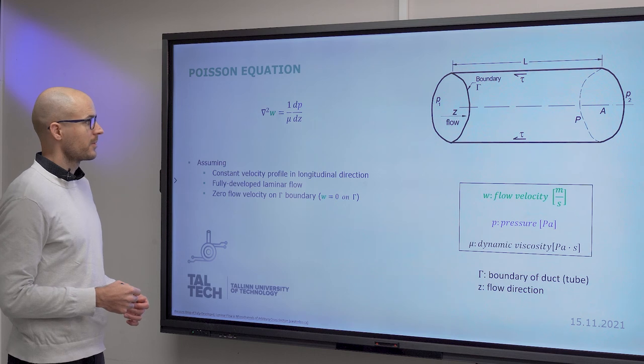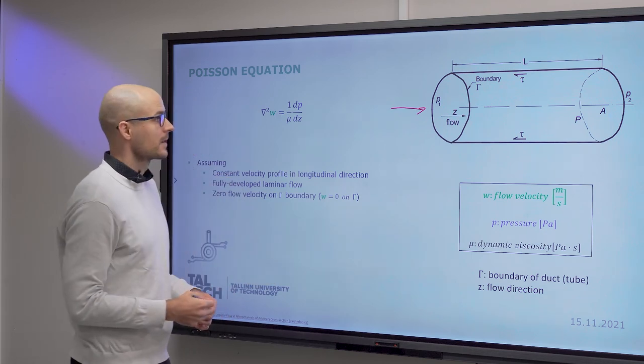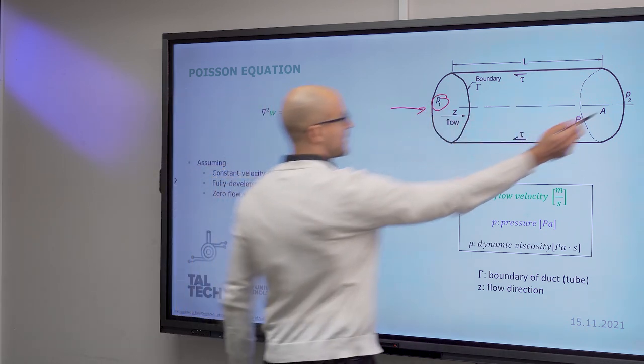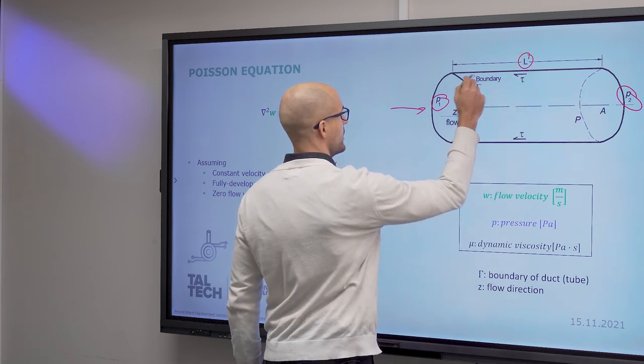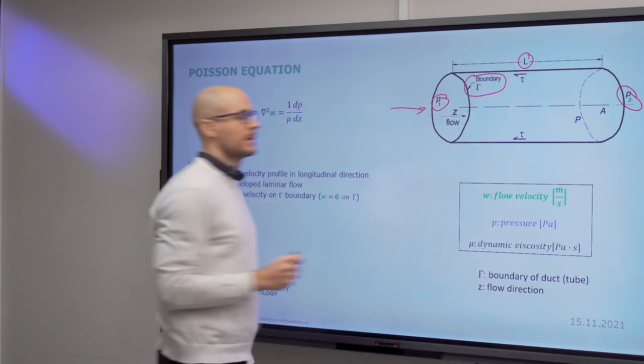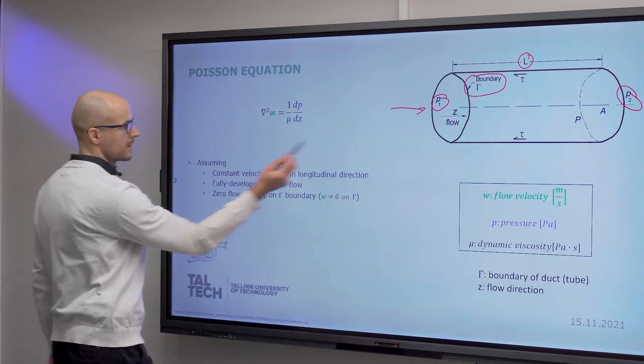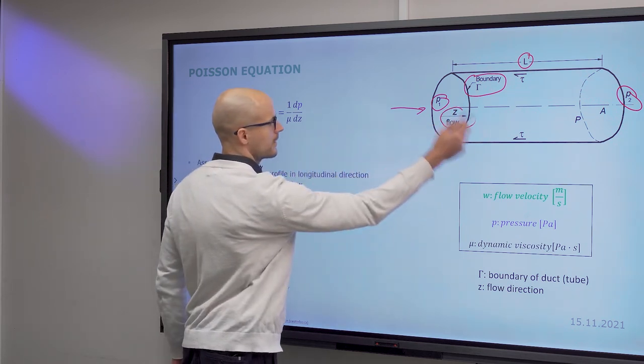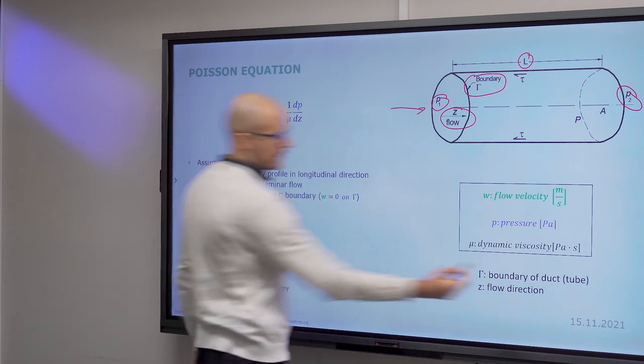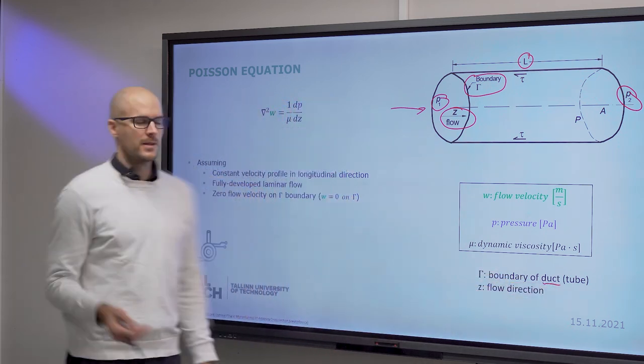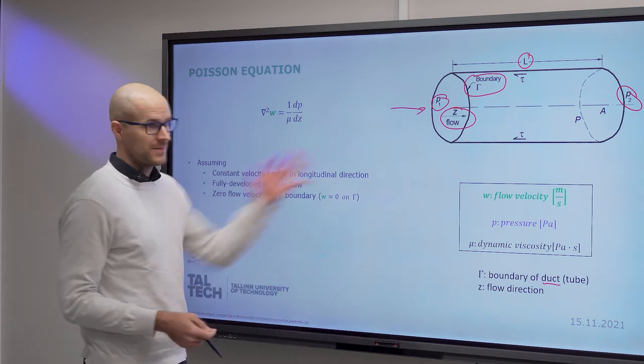So first of all the Poisson equation. If you have a pipe or a microchannel for us, and again you have inlet pressure, outlet pressure, characteristic length. This is the boundary of your cross section, denoted by gamma. And this is your flow direction. Often in literature you find the pipe called duct or tube. That's totally valid, but for us this is a microchannel.